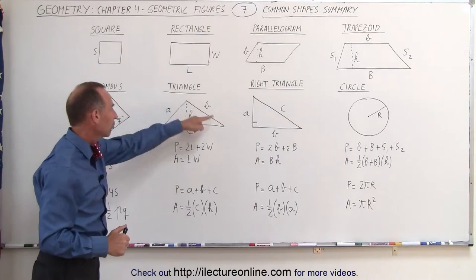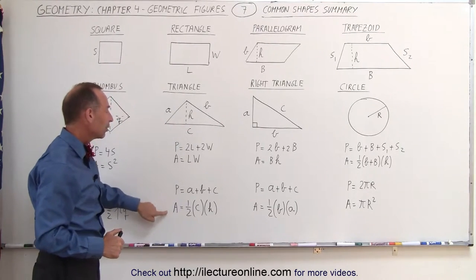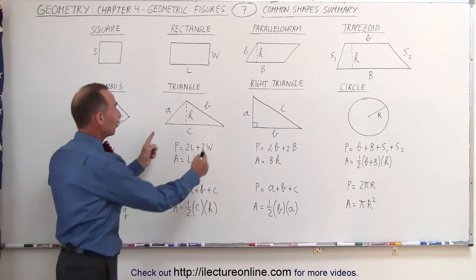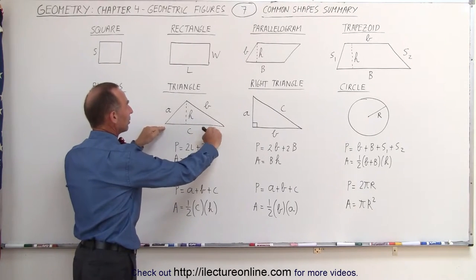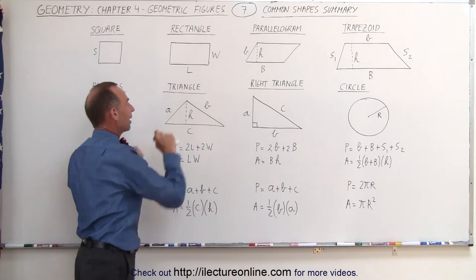On the triangle, the perimeter is simply the sum of the three sides, and the area is one-half the base times the height. In this case, the base is the flat side that's at the bottom of the triangle, in this case that's c, times the height h.